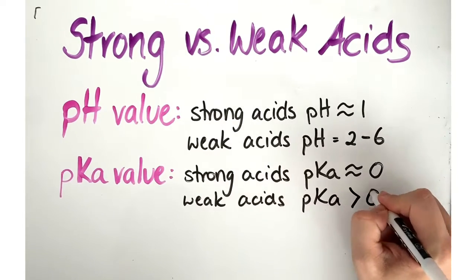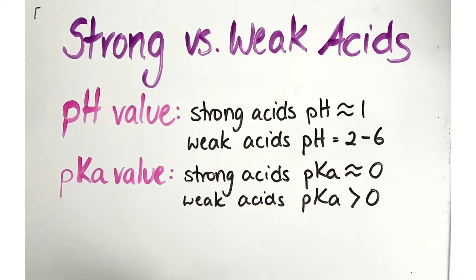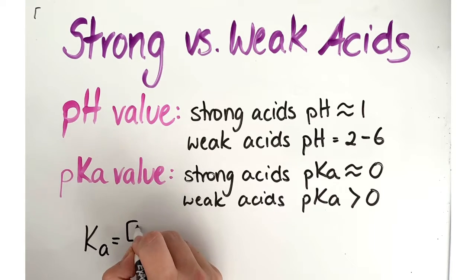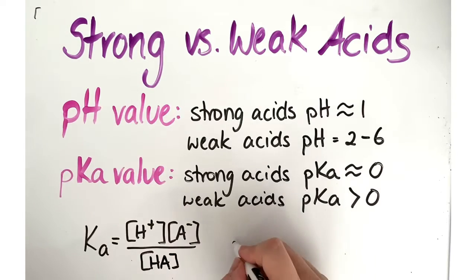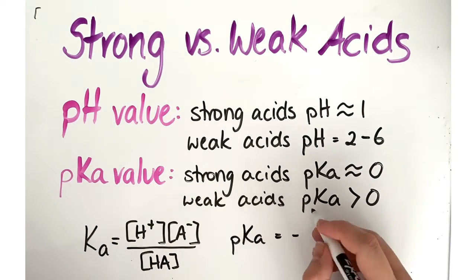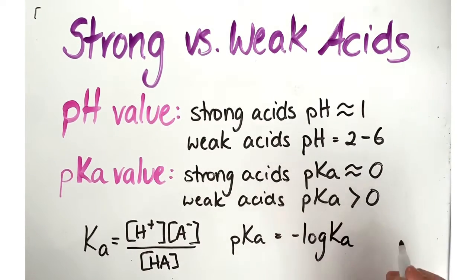How do you determine what the pKa value is? We use our dissociation constant Ka, where we multiply the concentration of the products then divide that by the concentration of the reactants. And then to convert Ka to pKa, we take the negative log of the Ka value.